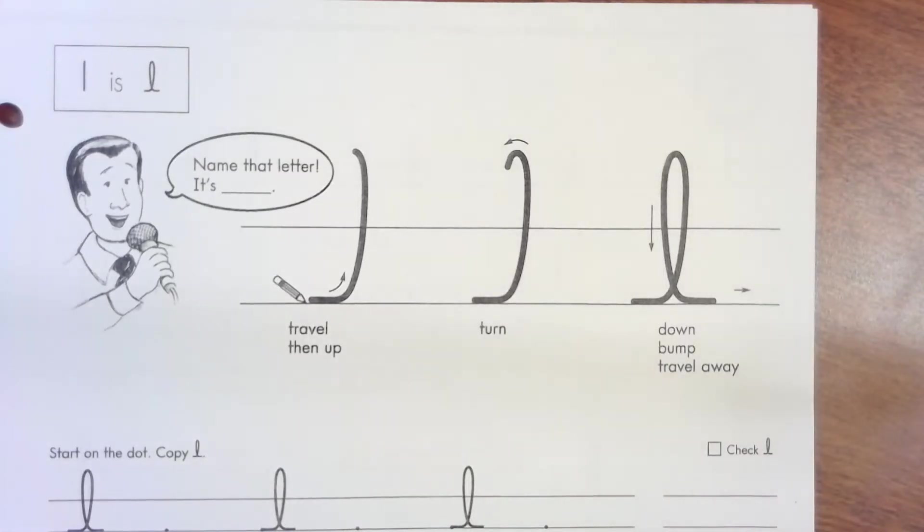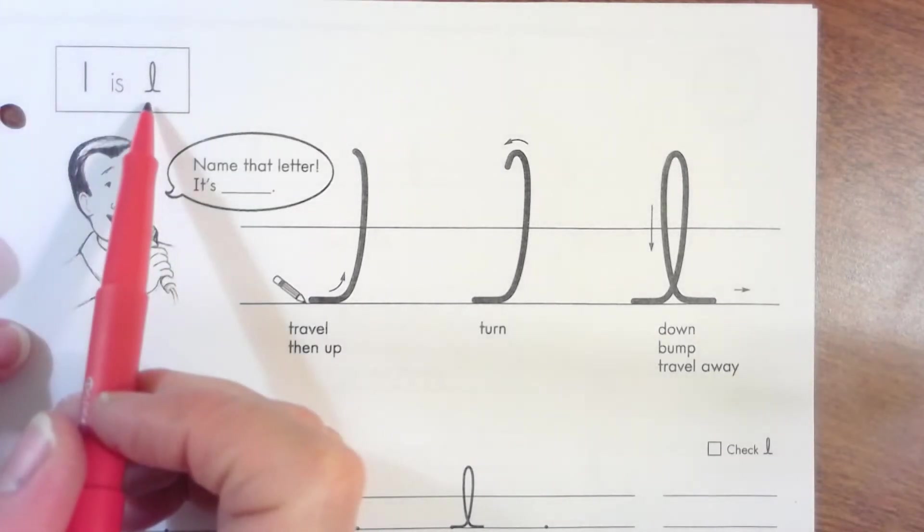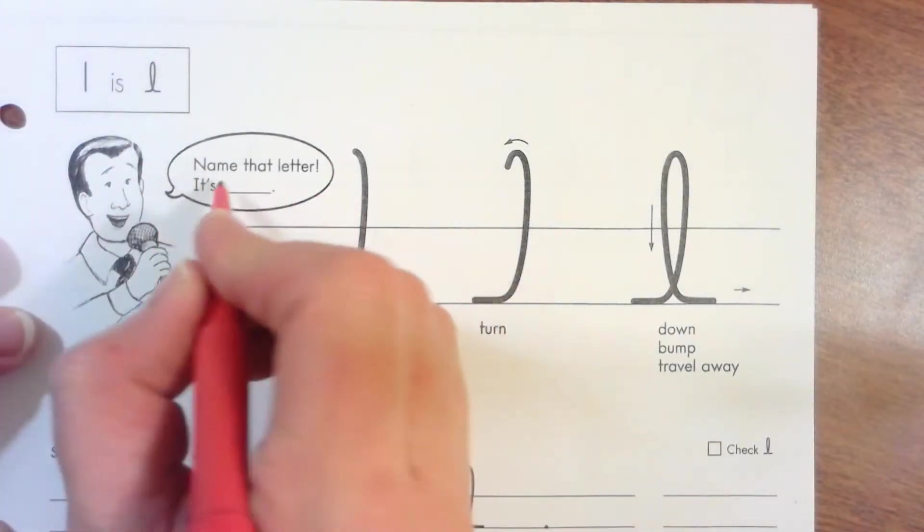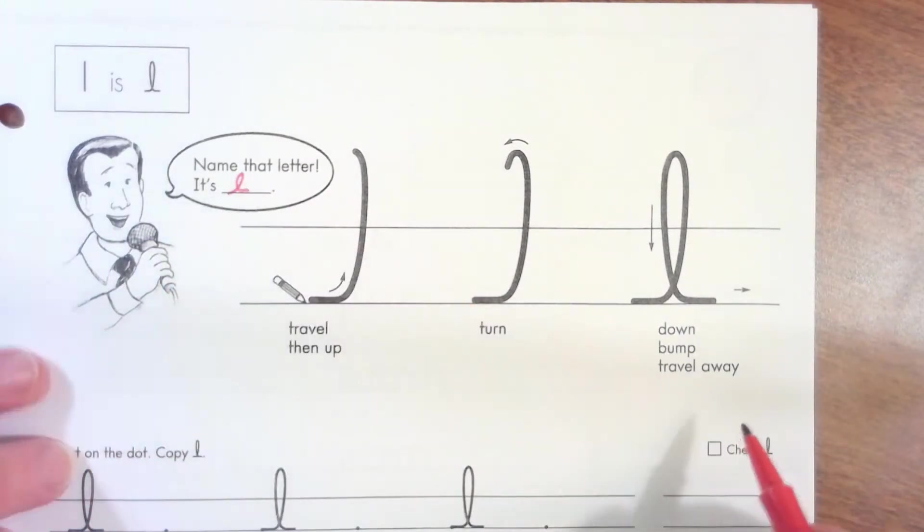Hey friends, now we're gonna do the letter L and this is on page 22 and 23. This is the printed L and this is the cursive L. He says name that letter, it's an L.